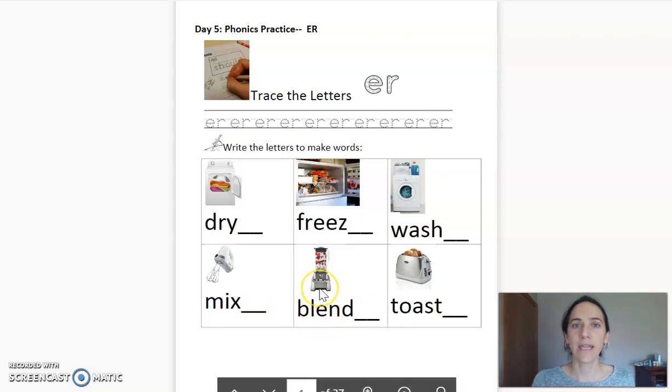This is a blender. Please write the E-R. Repeat after me. Blender. Great job. We can use this to blend food to make a smoothie.